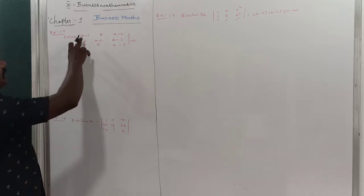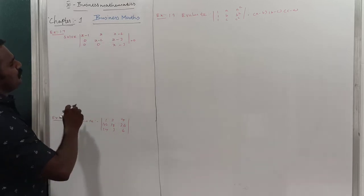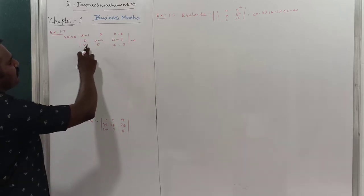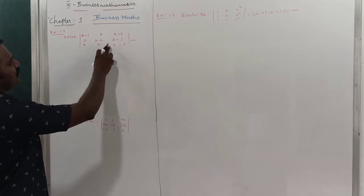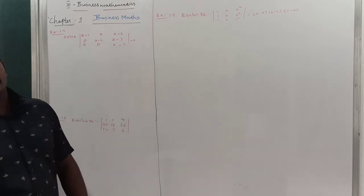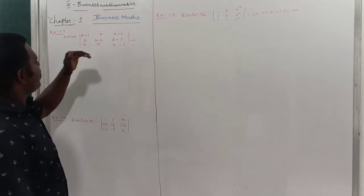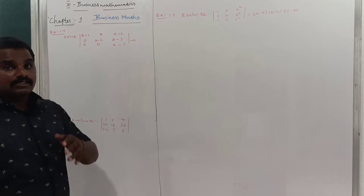Solve the determinant: the matrix has entries (x-1), x, (x-2) in the first row; (x-2), (x-3), 0 in the second row; and 0, (x-3) in the third row. This determinant is equal to 0. Find the value of x.